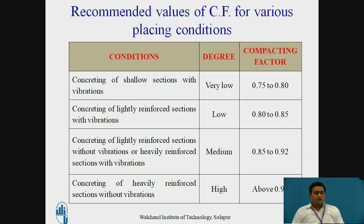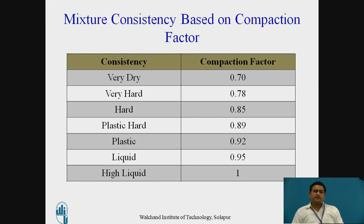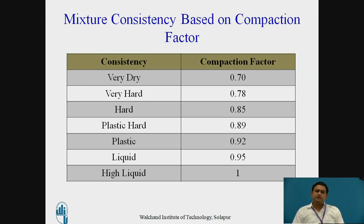Keep in mind that as per the client requirement, we have to define the particular compaction factor. This is the mixture consistency based on the compaction factor. The consistencies are: very dry — 0.70, very hard — 0.78, hard — 0.85, plastic hard — 0.89, plastic — 0.92, liquid — 0.95, and high liquid — 1. So keep in mind that as per the requirement, we have to define the particular consistency for the concrete along with its compaction factor.